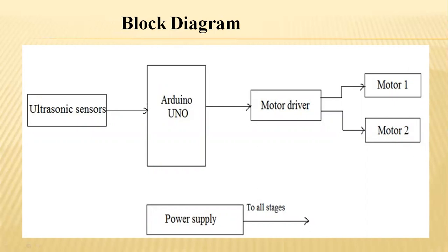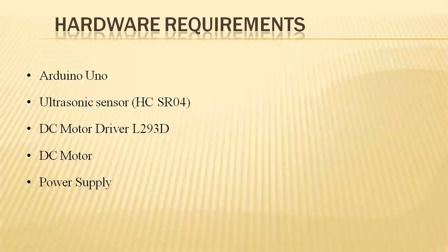Coming to the block diagram, the ultrasonic sensors are sound sensors which operate on the basis of echo functionality. They give feedback to the Arduino unit. The Arduino unit is the controller that receives signals from the sensors and gives instructions to the motor drives, which then direct the motors to operate in a particular way or path. Power supply is necessary for all the motors and external connectivities.